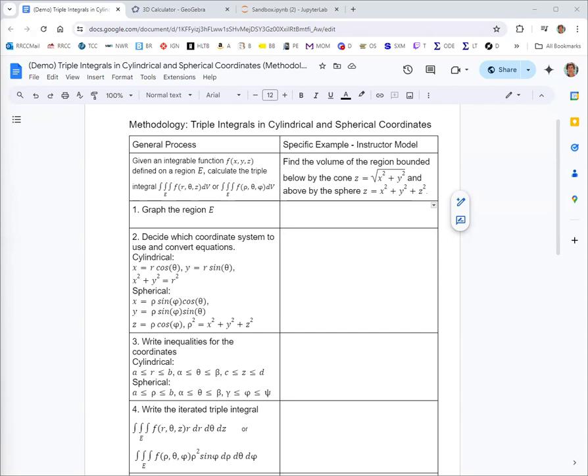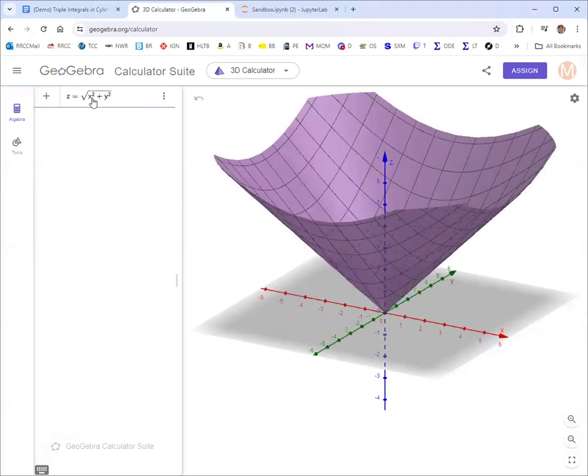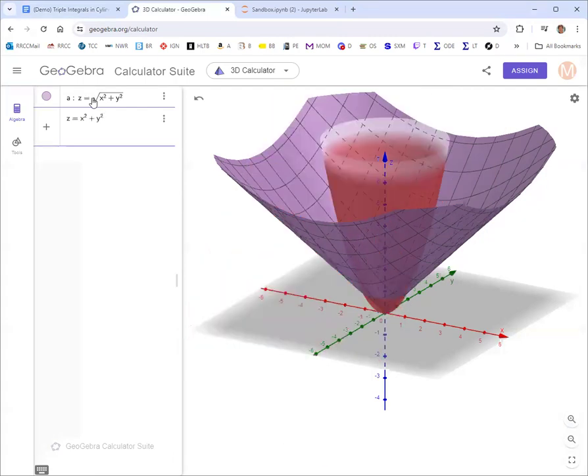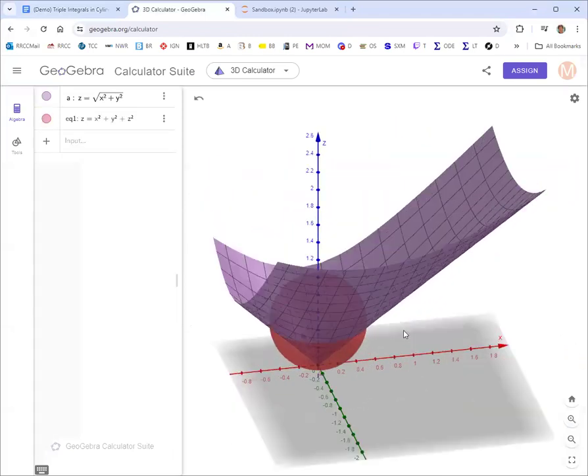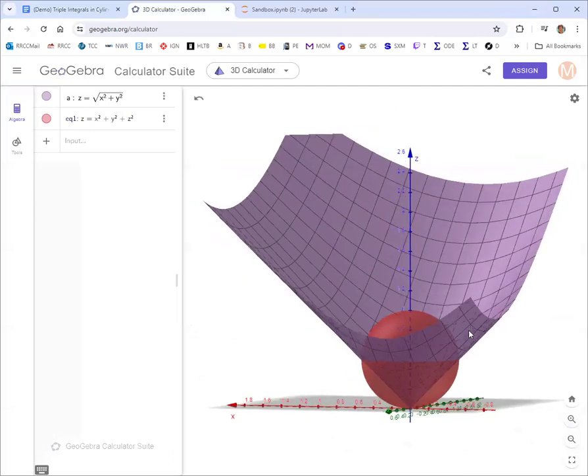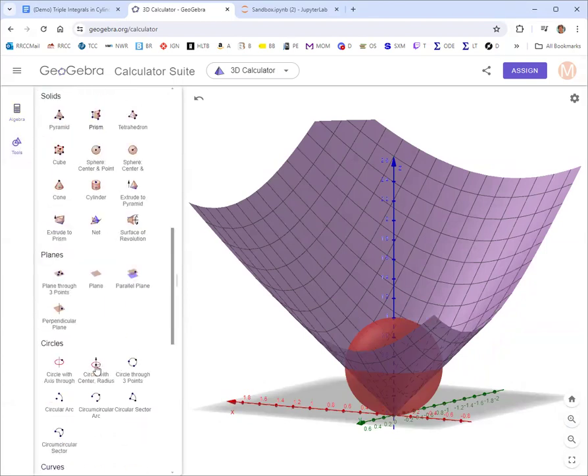So we're first going to graph the region, and we'll use GeoGebra for that. Let's put in the equations we have for the cone: z equals square root x squared plus y squared. And the sphere: x squared plus y squared plus z squared equals 2.